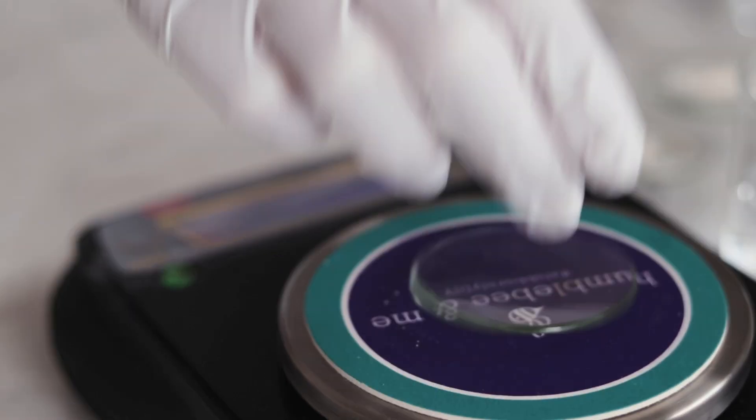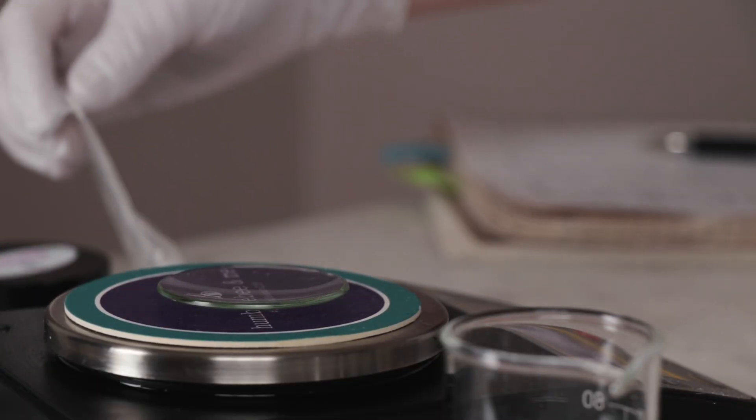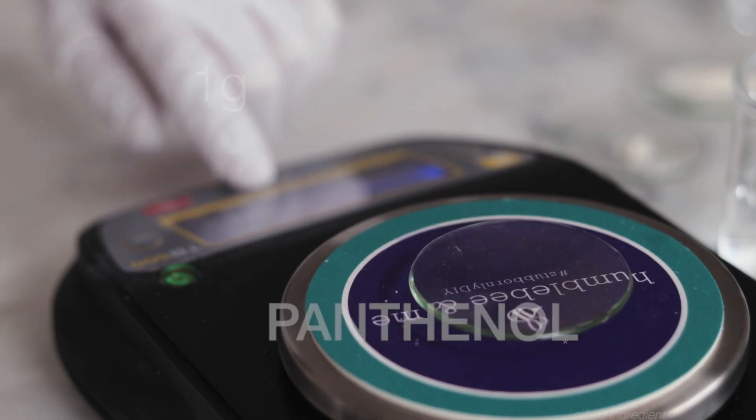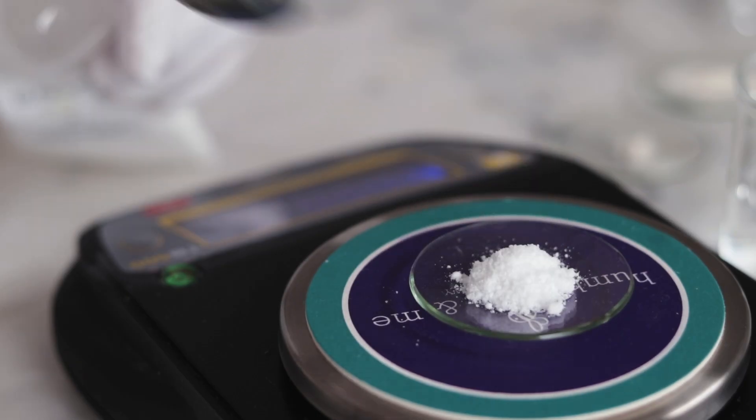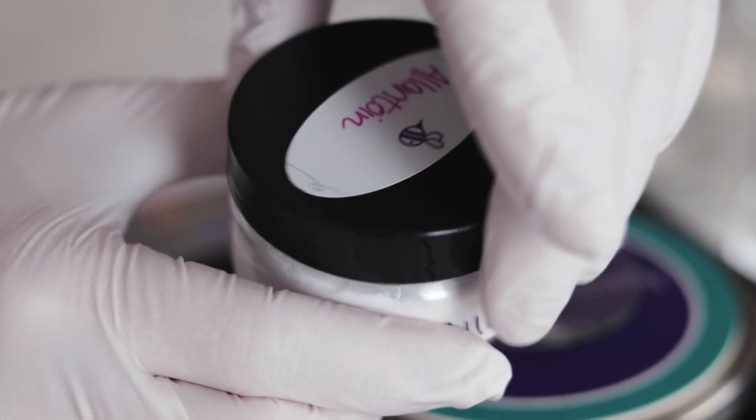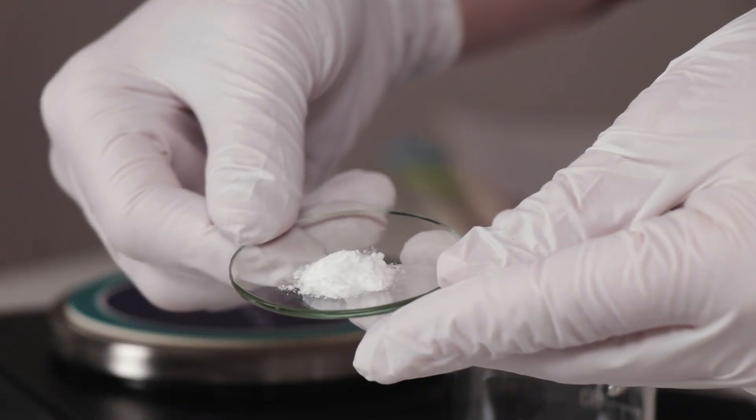The last two ingredients we'll weigh out right now are two skin-soothing actives to help counter any irritation the lactic acid could cause. You'll need 1 gram of panthenol, also known as vitamin B5, and 0.4 grams allantoin. The amount of allantoin is calculated to be within the limits of the water in the formulation to dissolve it, so I don't recommend using more. If you don't have these ingredients, you could consider using a skin-soothing, water-soluble botanical extract instead. Please check the substitutions list at the end of the blog post formulation for full details.